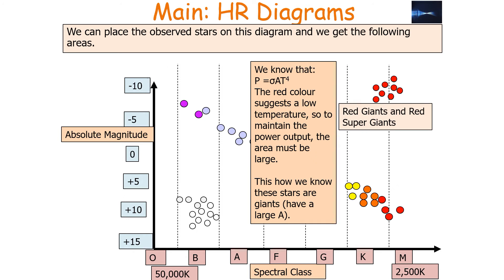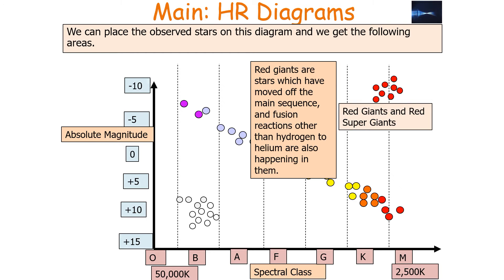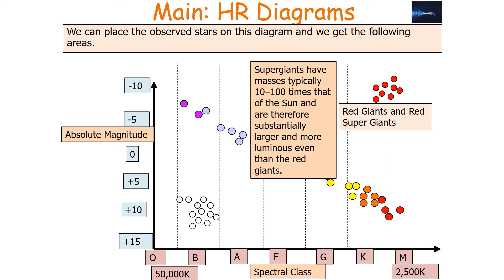Because P = σAT⁴, these stars must be giants because the low temperature indicates that to maintain the power output the area must be large. The red giants are stars which have moved off the main sequence and fusion reactions other than hydrogen to helium are happening inside them. Supergiants have masses typically 10 to 100 times that of the Sun, are substantially larger and more luminous than even the red giants, and are hot enough for nuclear fusion reactions to produce carbon and the heavier elements.